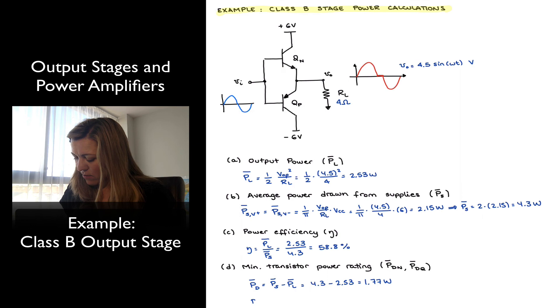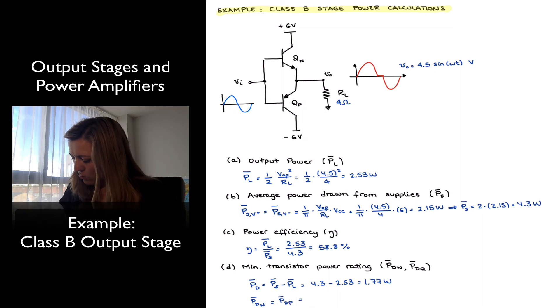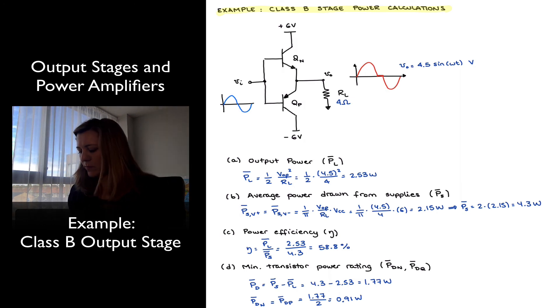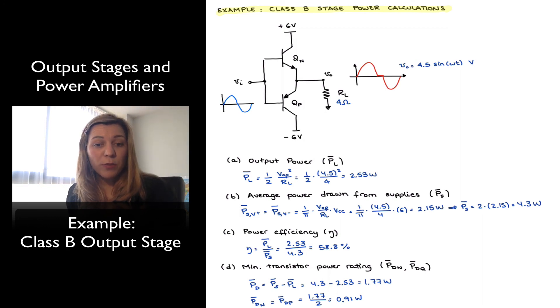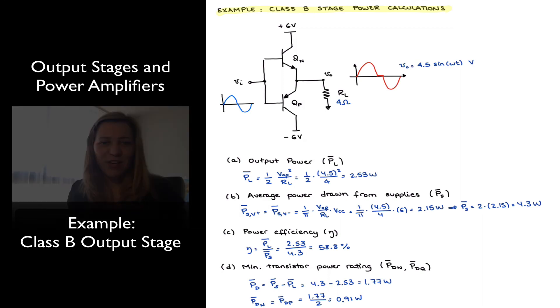Each transistor is going to dissipate power over half a cycle, and so each transistor is going to dissipate half of that power over an entire cycle. Therefore, the power dissipated on transistor N equals the power dissipated on transistor P, which is equal to 1.77 watts divided by 2, or 0.91 watts. That's the power dissipated. Obviously, when I go to select my transistors, I will want to err on the side of caution and select transistors with the maximum power dissipation that is slightly above the specification.